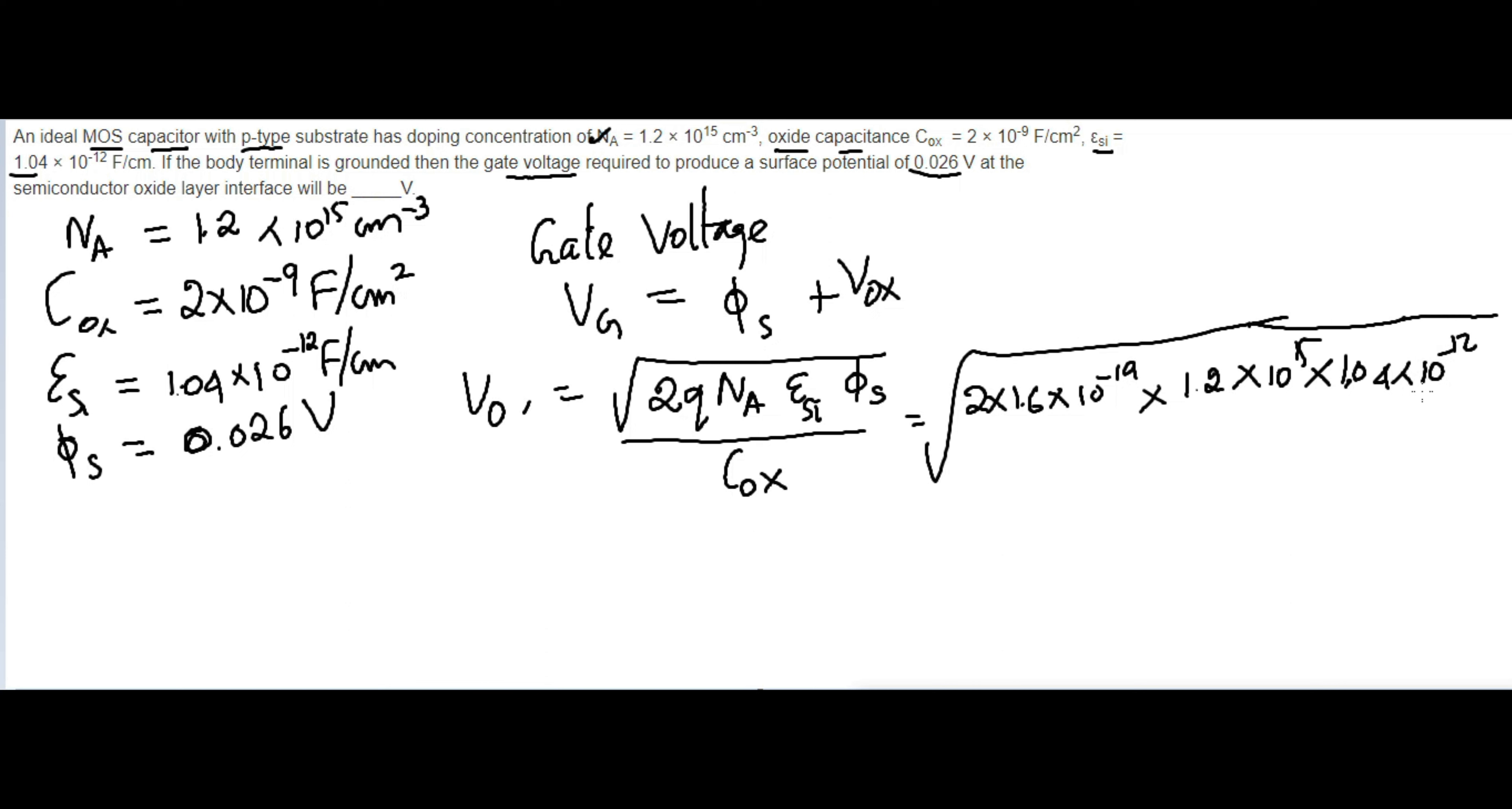Then the surface potential 0.026 volt, all divided by COX which is 2 × 10^-9. If you do the simplification you'll get the answer.